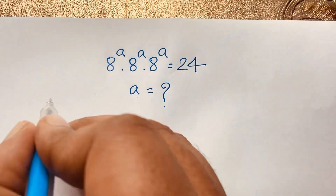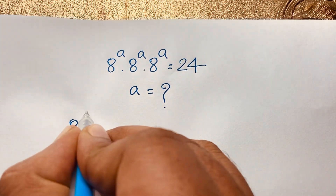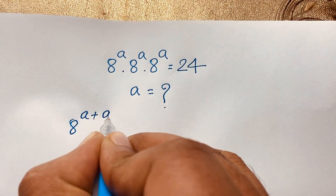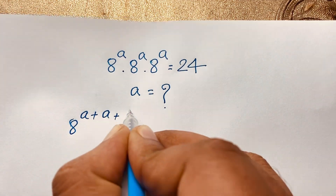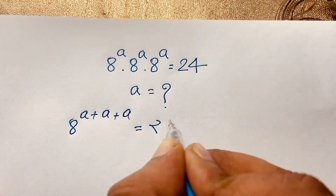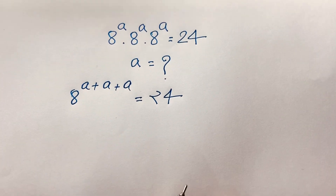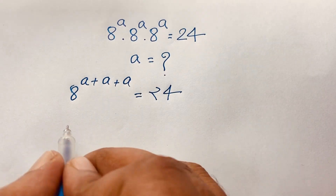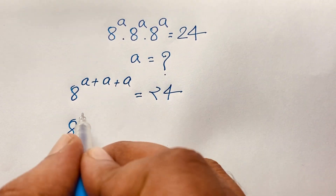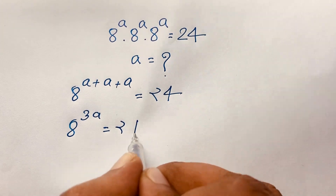Looking at the solution, it will be 8 to the power A plus A plus A is equal to 24. Now here, 8 to the power A plus A plus A, it will be 3A and here is 24.